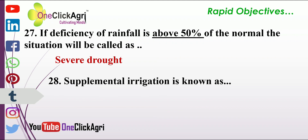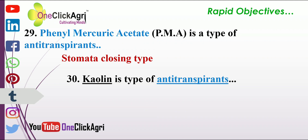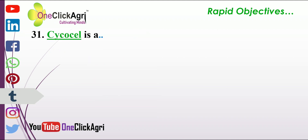Supplemental irrigation is known as life-saving irrigation. Phenyl mercuric acetate is a type of anti-transpirant of the stomata-closing type. Choline is a type of anti-transpirant of the reflecting type. Psychosyl is a growth retardant.